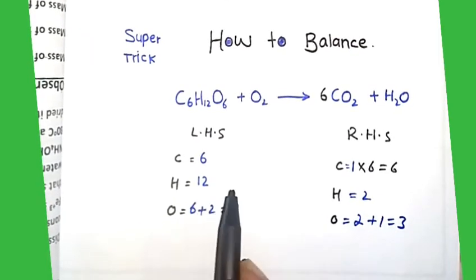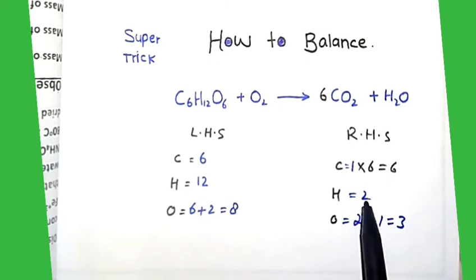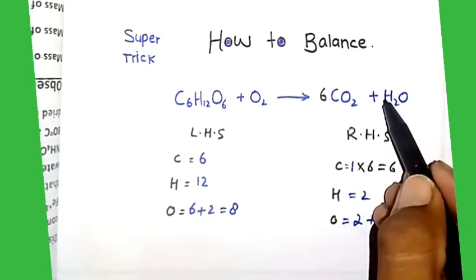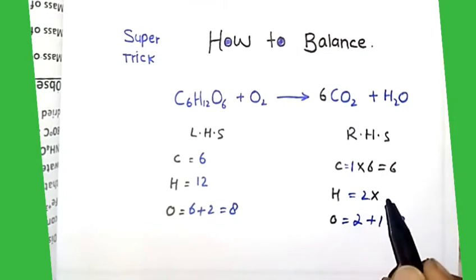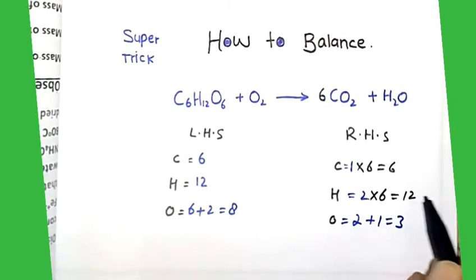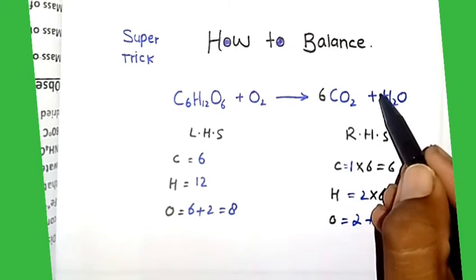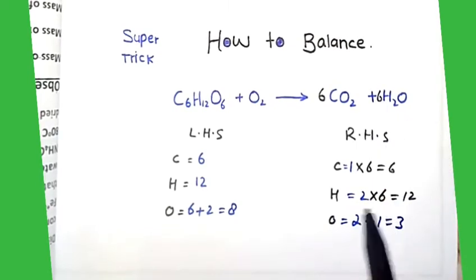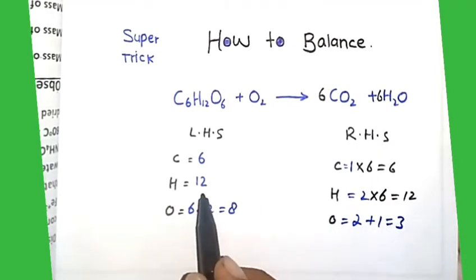Next we balance hydrogen. The hydrogen is 12, and here the hydrogen is 2. We need to multiply by 6 equal to 12. Then we put the 6 here. The hydrogen is 12 and hydrogen is 12.